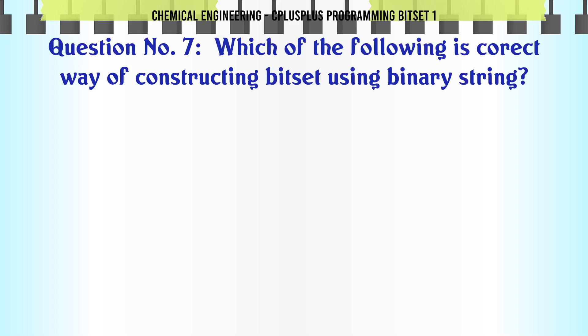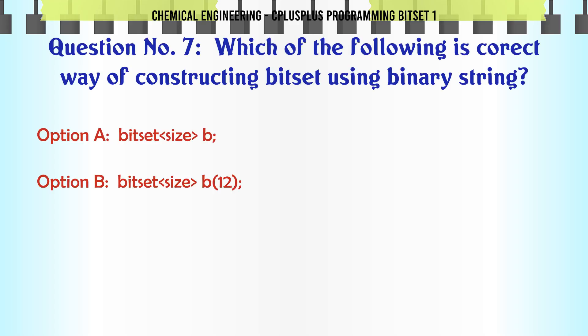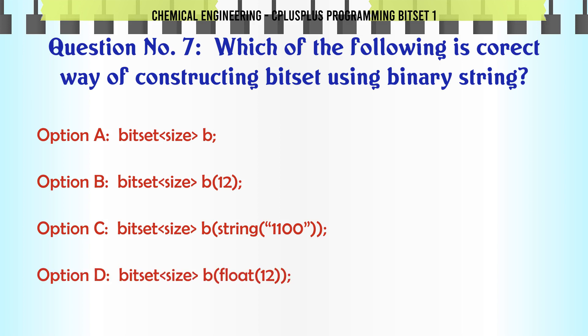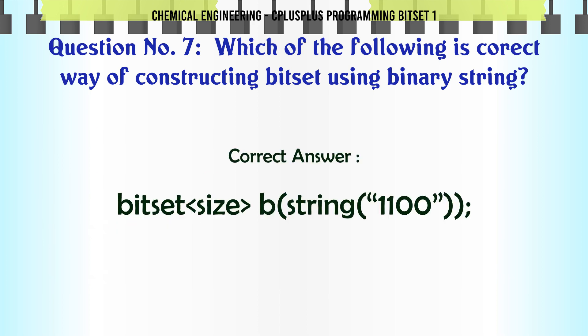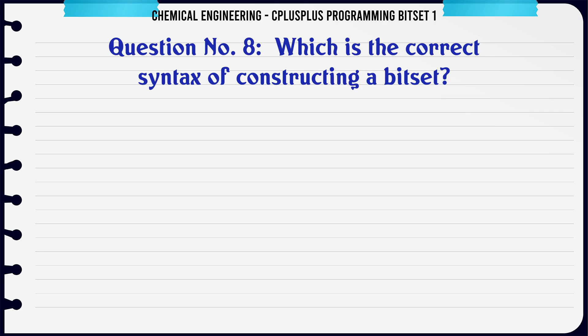Which of the following is the correct way of constructing a bitset using a binary string? A. bitset<size> B. B. bitset<size> B(12). C. bitset<size> B(string("1100")). D. bitset<size> B(float(12)). The correct answer is bitset<size> B(string("1100")).